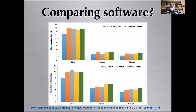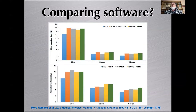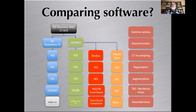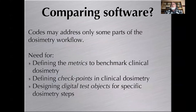The good news is that when you try to take the same processing steps across different software — whenever that is feasible — you end up with results that are pretty close. Here you can see a comparison between Dosimetry Toolkit, Hybrid Dose (Hermes), PlanetDose from Dosisoft, and MIM, showing results that are pretty close between the different software. But this hides the fact that these software packages do not do the same things. It is very difficult to make definitive comparisons since they address different steps in the clinical dosimetry workflow.